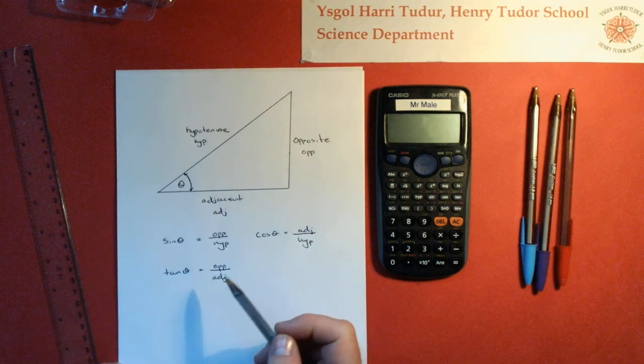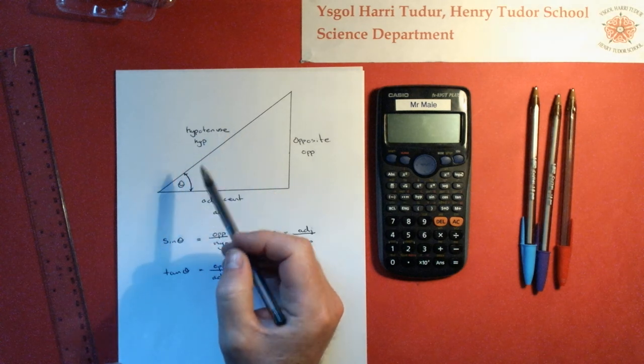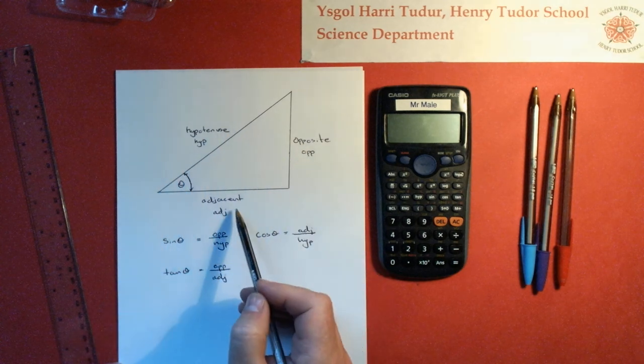So what this lets me do is if I've got a line and an angle, I can find the opposite and the adjacent.